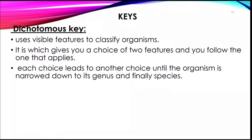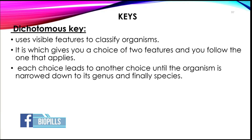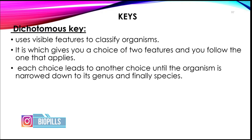A dichotomous key uses visible features in order to classify organisms. It gives you a choice of two features and you follow the one that applies. Each choice leads you to another choice until the organism is narrowed down to its genus and finally the species.